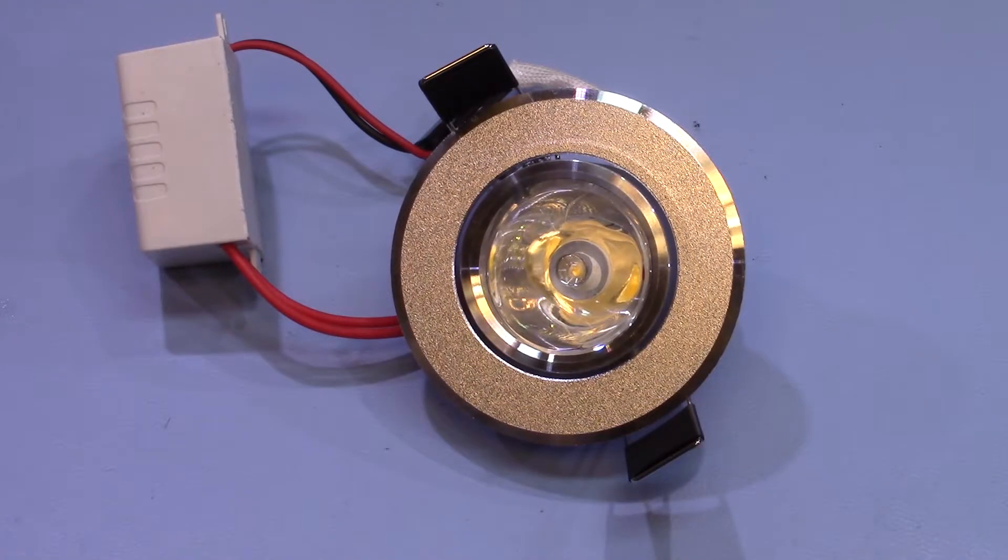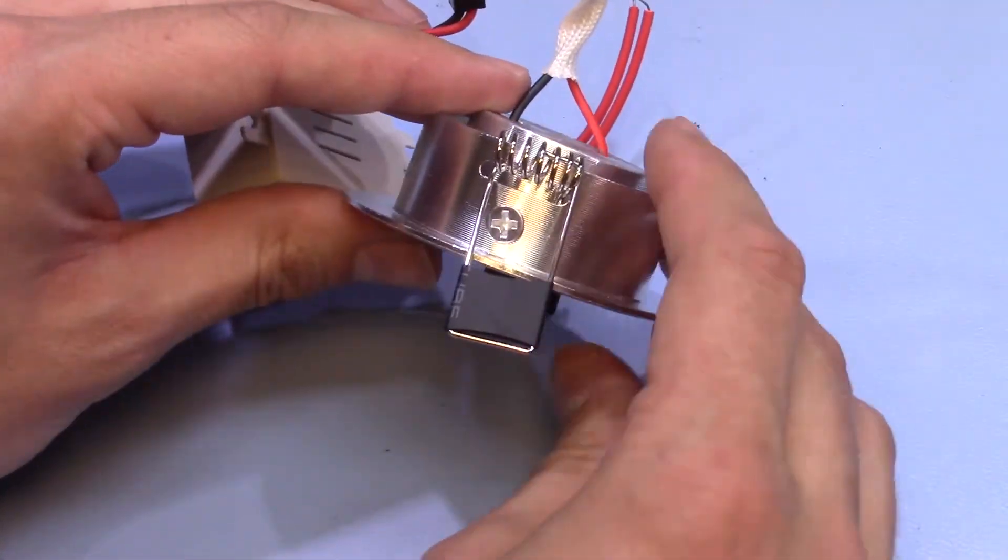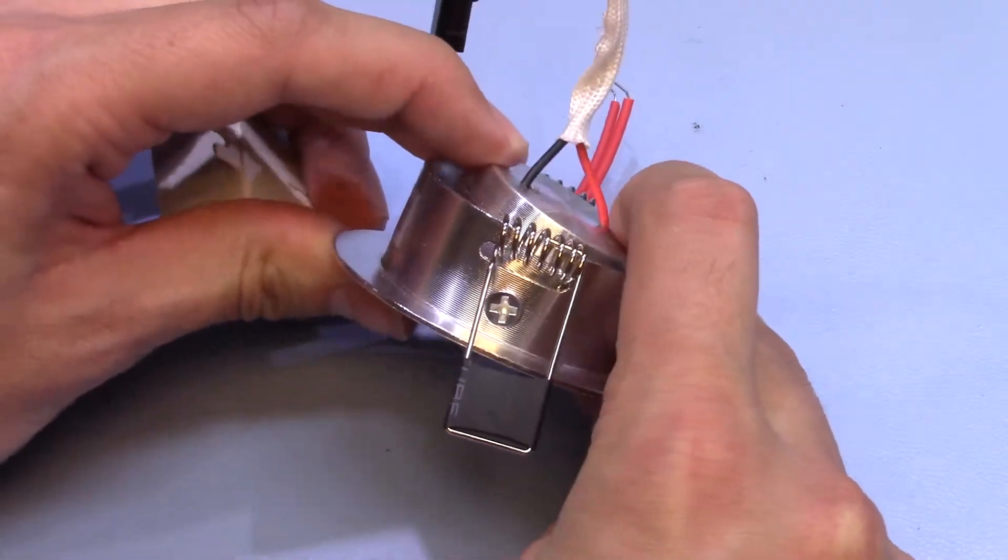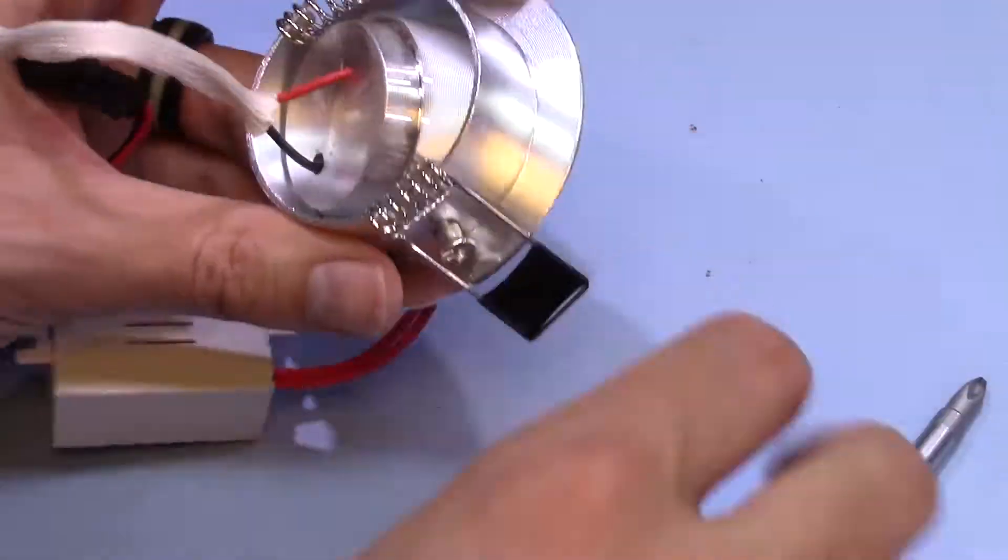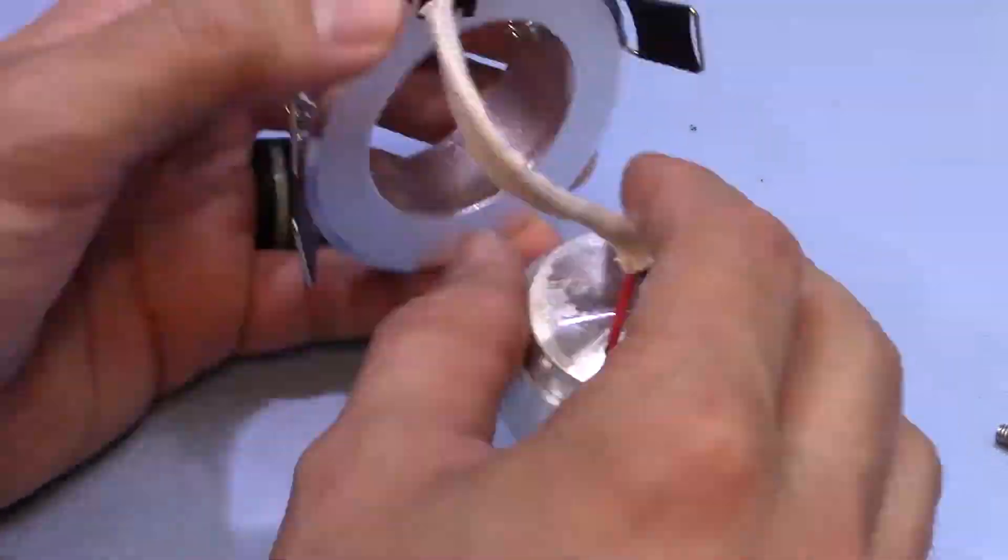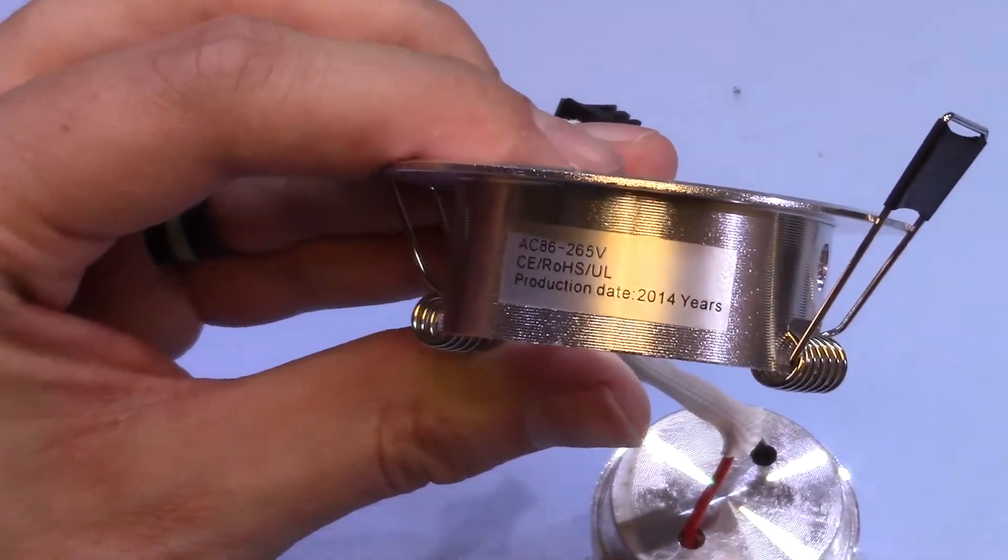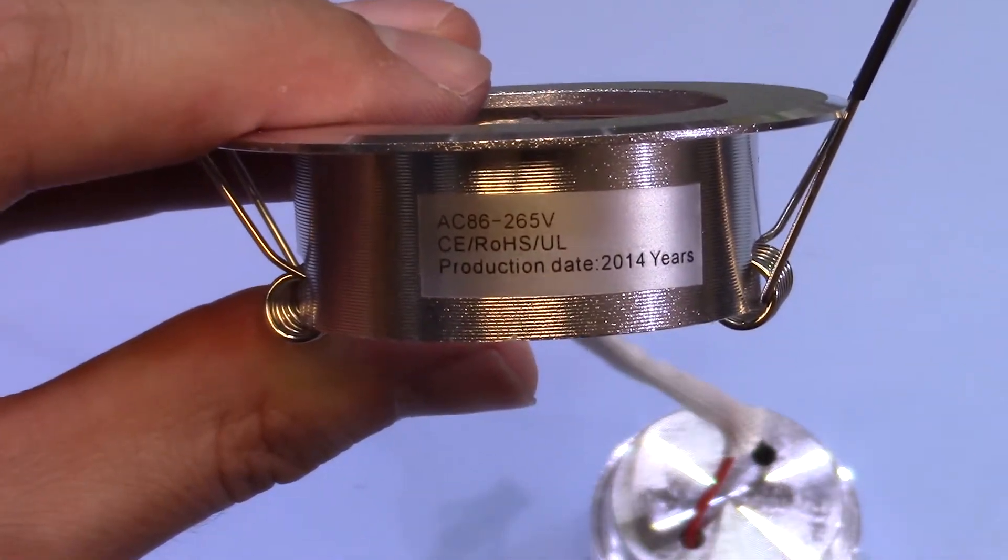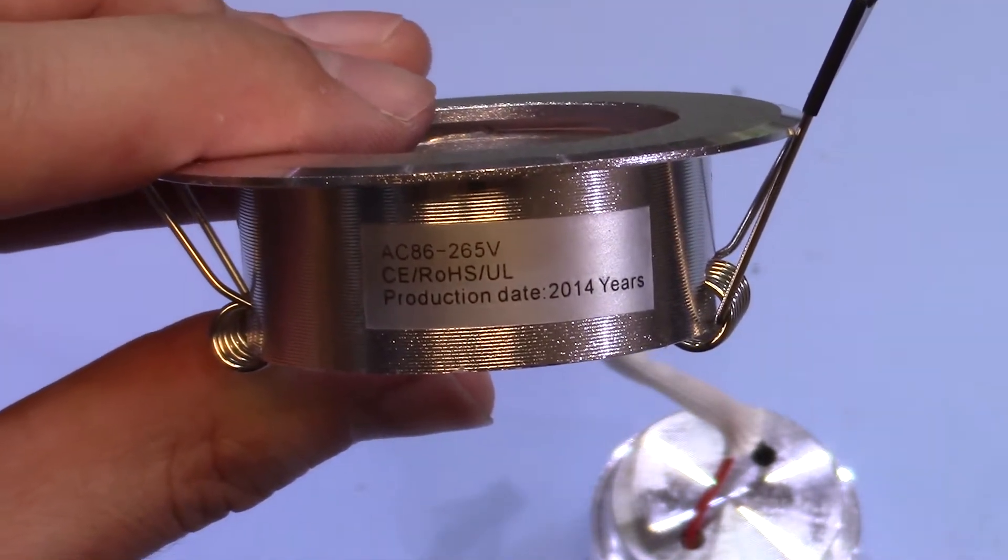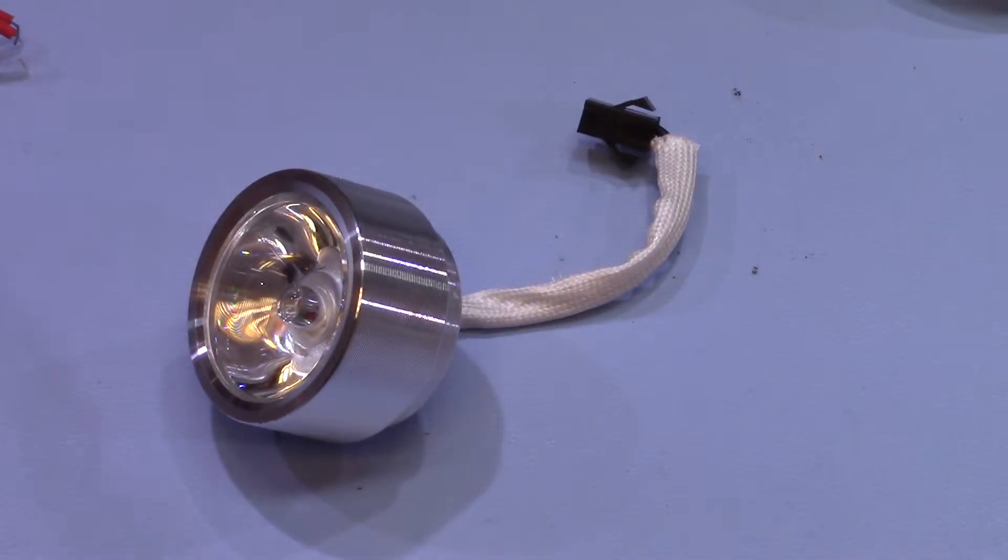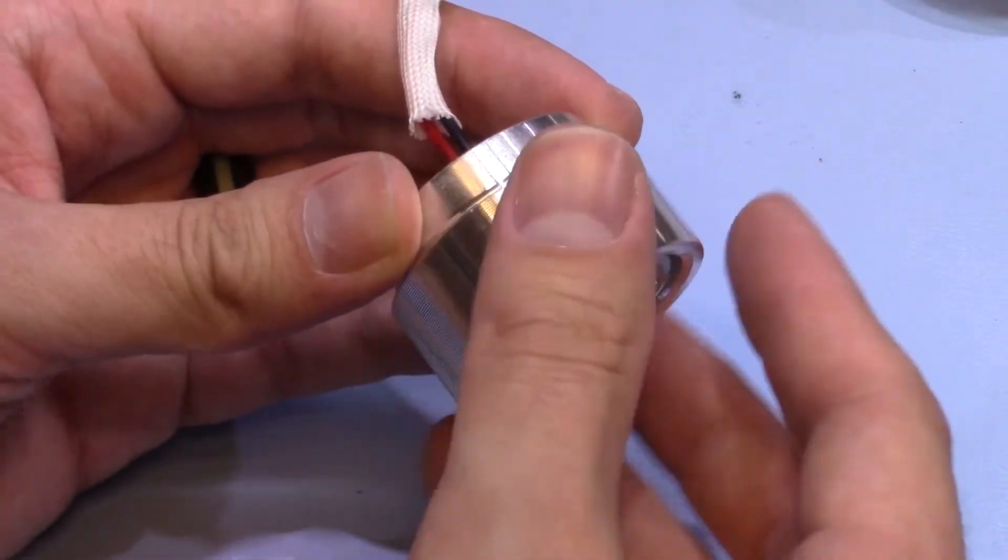I probably will want to change the LEDs in these, but I'll give them a try with the LED that's fitted. First, I'll try removing these screws on each side which provide the pivot for the LED module. On the side it says AC 86 to 265 volts, CE marked, ROHS, production date 2014. The back shell just unscrews from the front here.